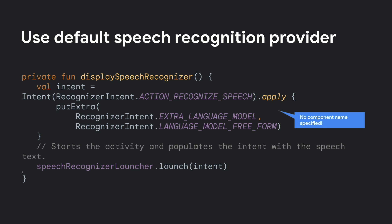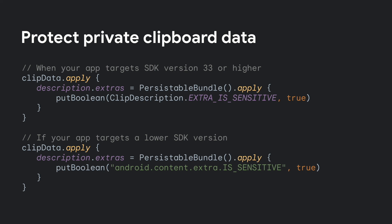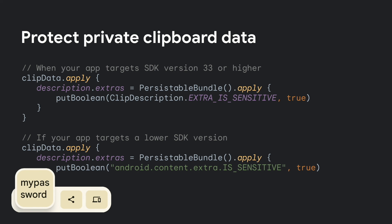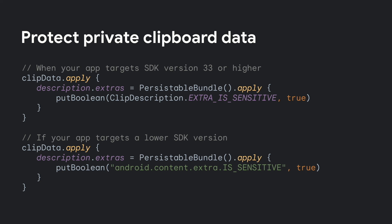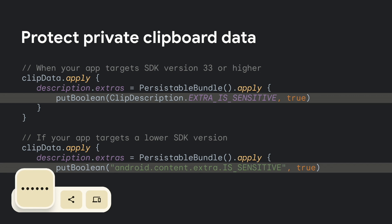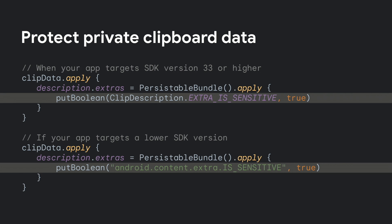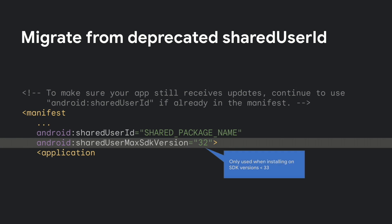We've removed the compatibility trampoline for the speech service from the Google Search app in Android 13, so use the device's default provider — basically, don't specify a component name in the recognizer intent. Android 13 now has a pop-up that provides visual confirmation of clipboard contents, so we've added a way to prevent sensitive data like passwords or credit card numbers from being shown if copied to the clipboard. This is worth doing as soon as possible regardless of SDK target version. Finally, if you're relying on shared user IDs, please migrate to supported communication mechanisms; we've added a way to migrate so it's only not used on new installs.